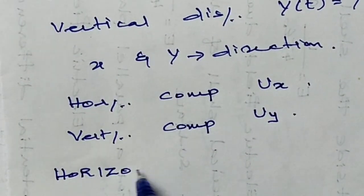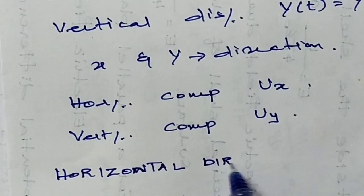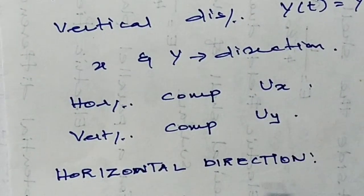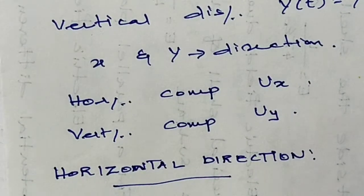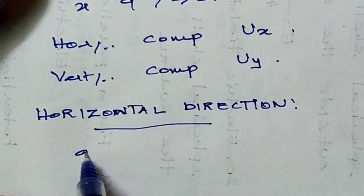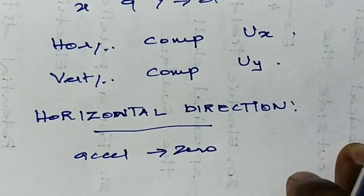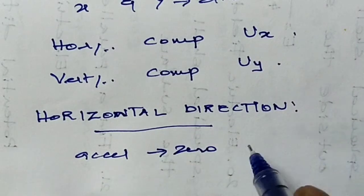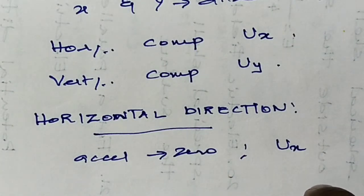Now moving to the motion along the horizontal direction. The particle has zero acceleration along the x-direction. The initial velocity along x is Ux, which remains constant throughout the horizontal motion.